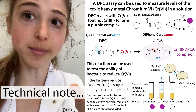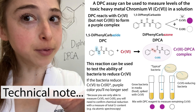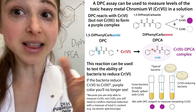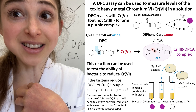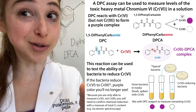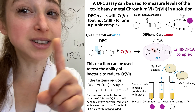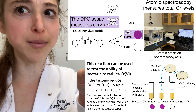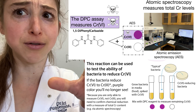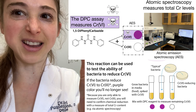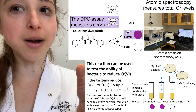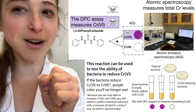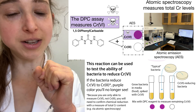Because DPC only reacts with chromium-6 and not chromium-3, if bacteria reduce chromium-6 to chromium-3 — the less toxic form that your body actually needs a little of — the solution will turn clear. Note that the assay cannot detect chromium-3, so you can't distinguish whether it turned clear because chromium-6 became chromium-3 or because the bacteria took chromium in entirely. However, we know from atomic emission spectroscopy (AES), which measures total chromium, that the bacteria are actually chemically reducing chromium to chromium-3.